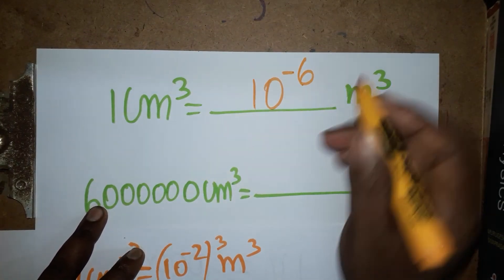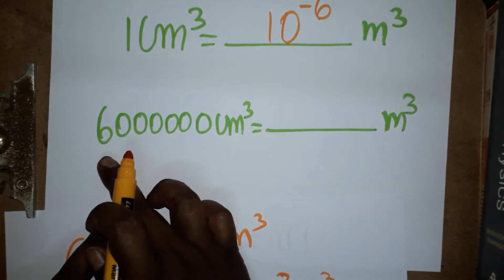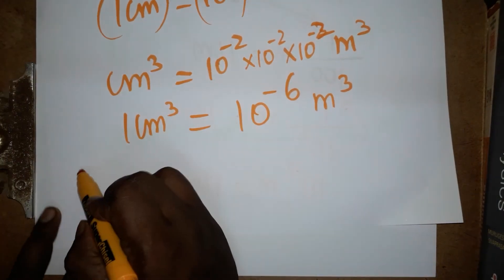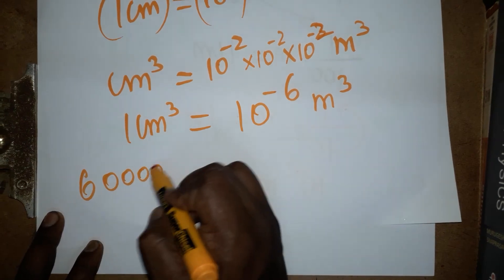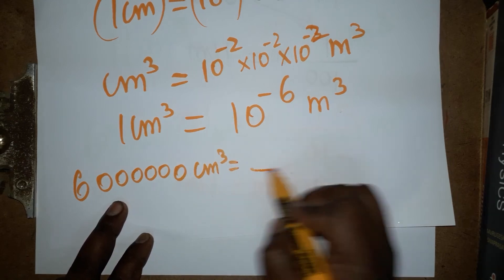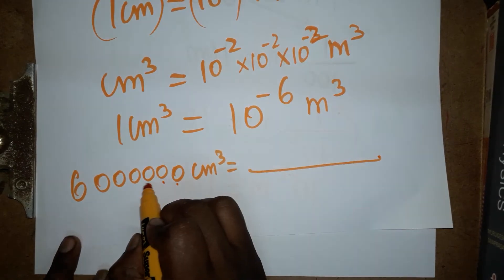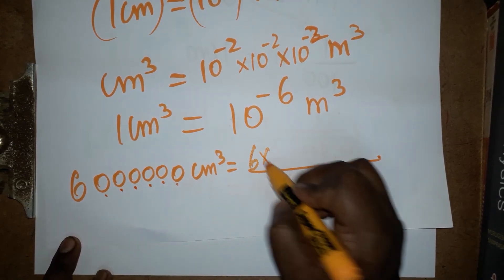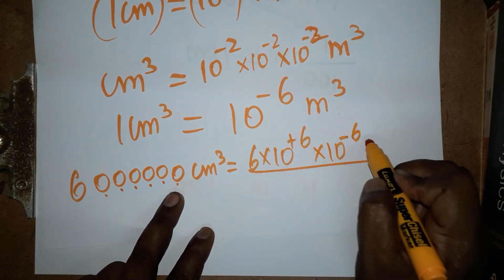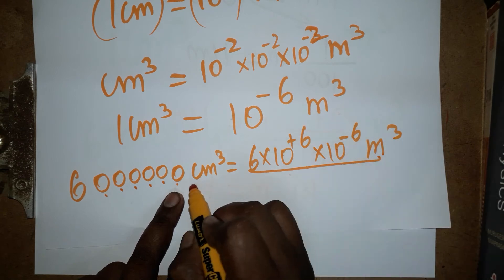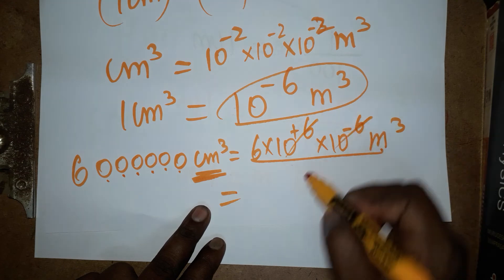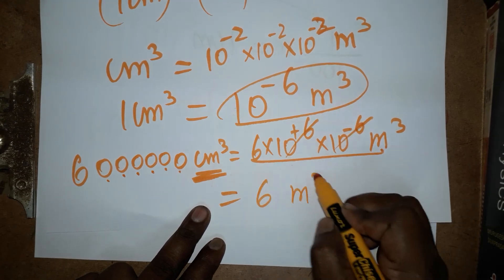For the second problem: 10 power 6 centimeter cube — that is 1 followed by 6 zeros — equals how many meter cubes? Since 1 centimeter cube equals 10 power minus 6 meter cube, we get 10 power 6 times 10 power minus 6 meter cube. The powers cancel, giving 1 meter cube, so the answer is 1 meter cube.